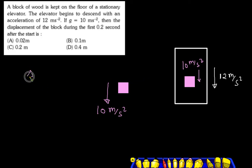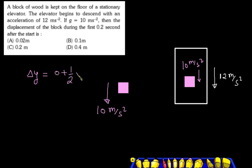Delta y equals ut plus half at squared. Initial vertical velocity u is zero. So the acceleration will be 10 m per second square and t is 0.2 seconds. This is the key point of the question — there will be many mistakes here if you don't recognize that the block loses contact.